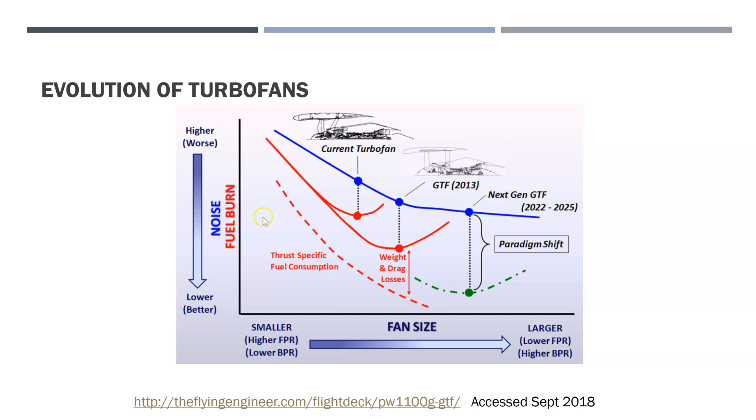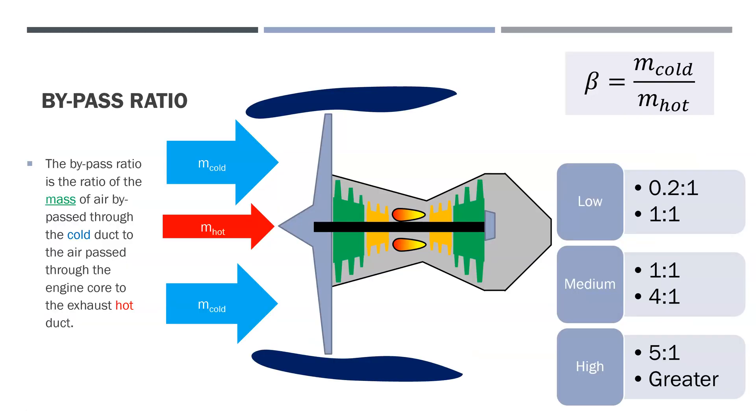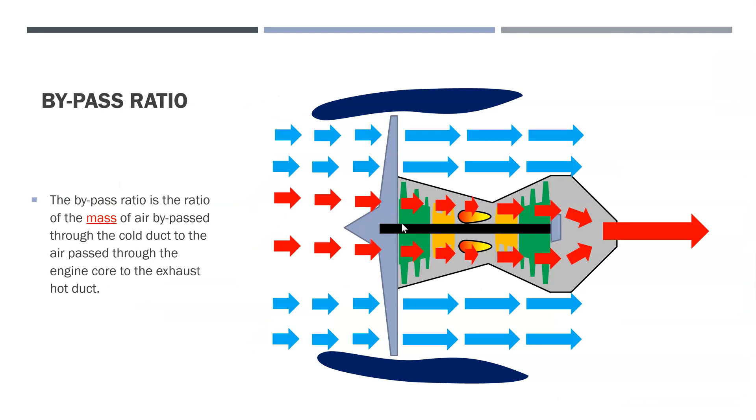So just to conclude, what is the bypass ratio? The bypass ratio is the mass of the cold stream air compared to the mass of the hot stream that's going through the core. The mass going through the outside compared to the mass going through the middle.